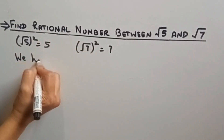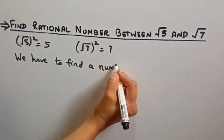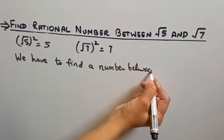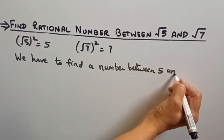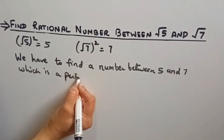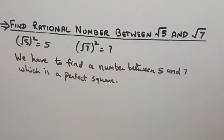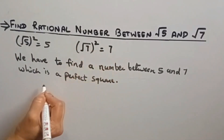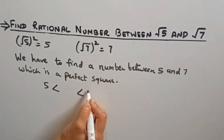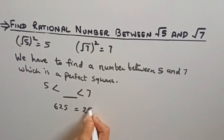Now we will find a number between 5 and 7 which is a perfect square. Between 5 and 7, we have to find such a number. As we know that 625 is the square of 25. Now if you put a decimal here, it will become 2.5.